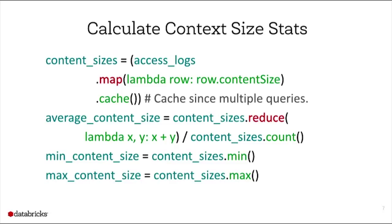To calculate content sizes of pages returned by my web log server, I take my RDD of access logs, apply a map function to grab the content size field, and cache that since I'll be calling it several times. To get the average content size, I do a reduce function to add up the sizes and divide by the total count. For minimum or maximum, I just call the actions min and max.